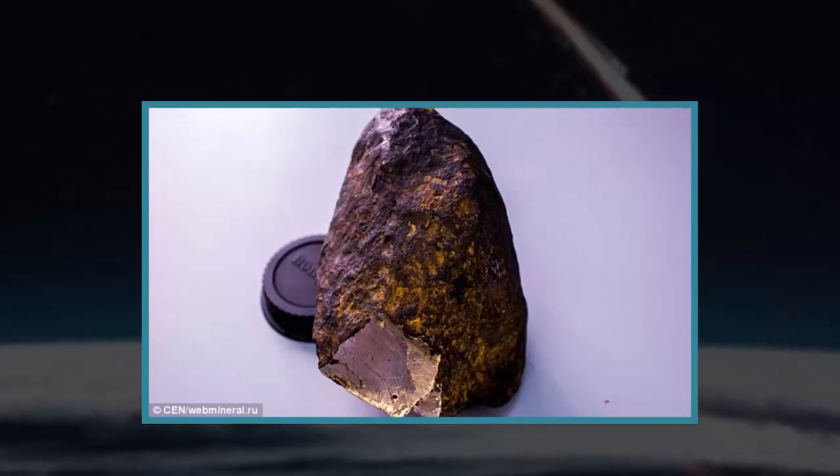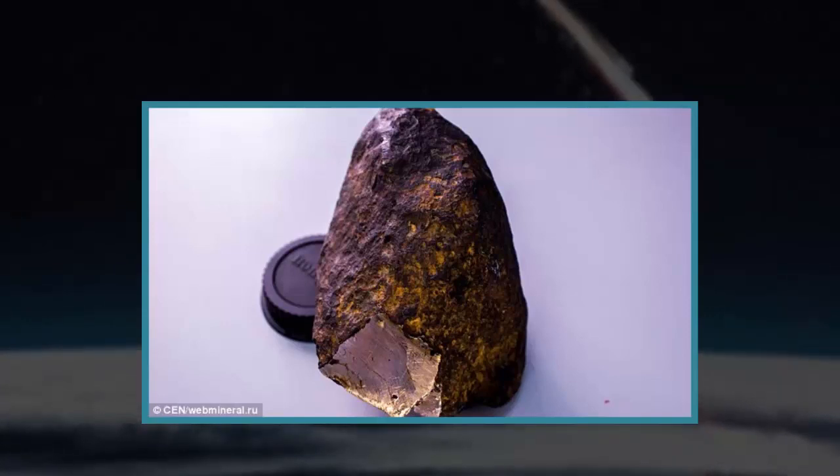A statement from the university said it forms isometric crystals or rounded grains. The size of wakatite grains is usually less than 5 micrometers.